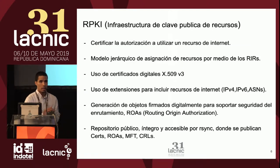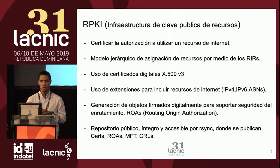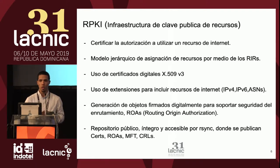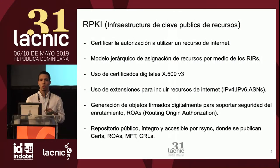Como solución para mitigar este tipo de ataques o secuestro de rutas, tenemos RPKI — Infraestructura de Clave Pública de Recursos. El objetivo de RPKI es autorizar la certificación para utilizar un recurso de internet. Se basa en un modelo jerárquico de asignación mediante los RIRs, y hace uso de certificados digitales X.509 versión 3, con extensiones para incluir recursos numéricos de internet IPv4, IPv6 y ASN. En RPKI se generan objetos firmados digitalmente — los ROAs (Routing Origin Authorization) — que contienen el AS de origen y los prefijos con largo máximo que se van a anunciar, y están firmados por los certificados emitidos en RPKI.